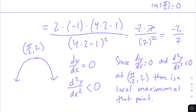Since dy/dx equals 0 and the second derivative is less than 0 at (pi/2, 2), there is a local maximum at that point. Those are the conditions by the second derivative test for a local max. Hopefully that helps you out with this AP calculus problem — feel free to leave any questions below.